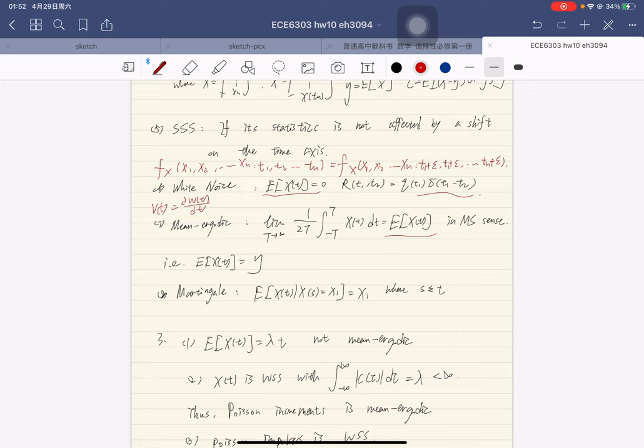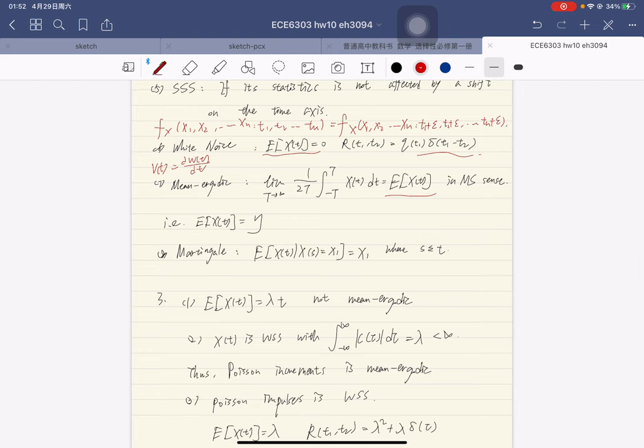The last one is Martingale, which is defined by: if the expectation of X(t) given X(s) equals to X(s), where s is less or equal to t. So in other words, it shows the conditional mean equals to the condition.